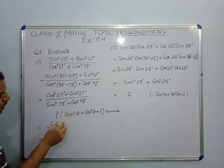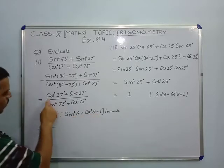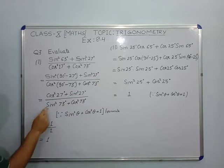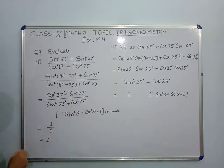And according to the identity sin²θ + cos²θ = 1, so cos²27° + sin²27° = 1. So 1 divided by 1 equals 1. This is the answer of the first part.